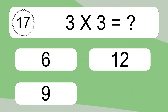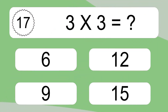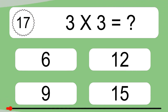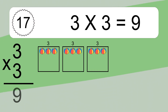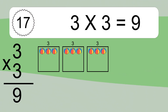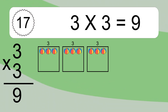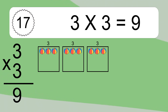Three times three equals what? Three times three equals nine. We have three boxes and each box has three colorful balls inside. If you count all the balls in all the boxes together, you will have three times three balls. This equals nine balls.